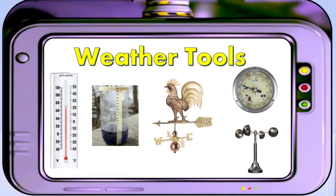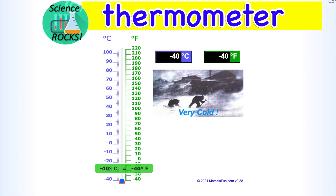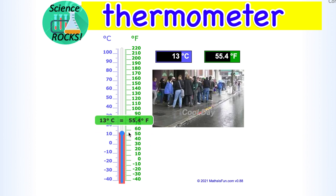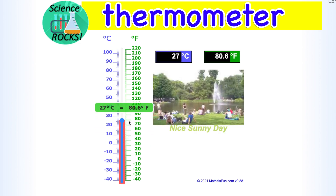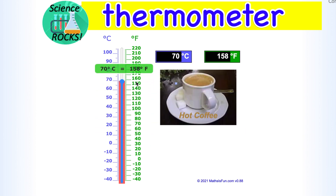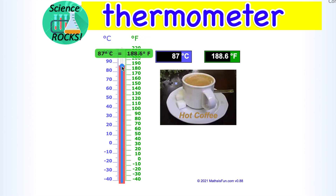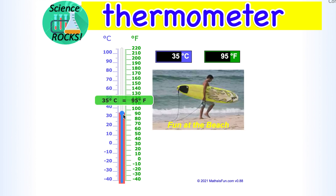Let's practice all the weather tools that we have learned. A thermometer is a device that measures the temperature. The liquid goes up the tube when something is hot, and the liquid slides back down the tube when something is cooler.